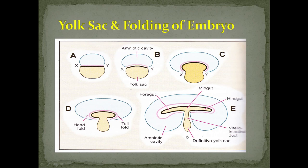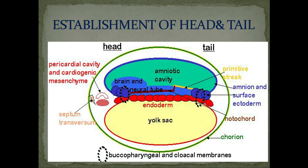In this diagram from the textbook: the amniotic cavity, yolk sac, head fold, and tail fold are shown, along with the division into foregut, midgut, and hindgut via the vitelline intestinal duct. Another diagram shows the amniotic cavity, yolk sac, buccopharyngeal and cloacal membranes as dotted circles, the future mouth, brain formation, neural tube, pericardial cavity, cardiogenic mesenchyme, and the unsplit part as septum transversum. The notochord is also visible, illustrating the formation of the head end and tail end.